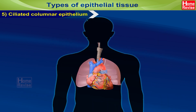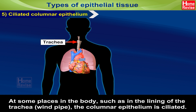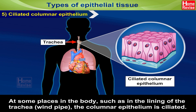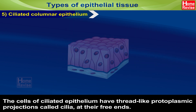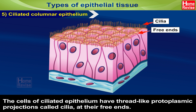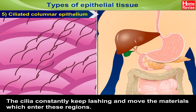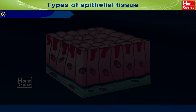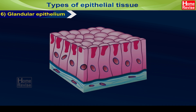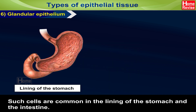5. Ciliated Columnar Epithelium: At some places in the body, such as in the lining of the trachea — the windpipe — the columnar epithelium is ciliated. The cells of ciliated epithelium have thread-like protoplasmic projections called cilia at their free ends. The cilia constantly keep lashing and move the materials which enter these regions. 6. Glandular Epithelium: Glandular epithelium, also a kind of columnar epithelium, contains some large cells which secrete certain chemical substances. Such cells are common in the lining of the stomach and the intestine.